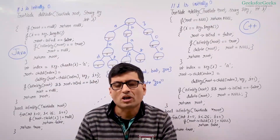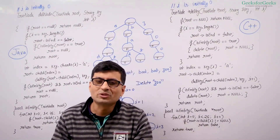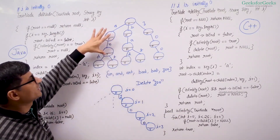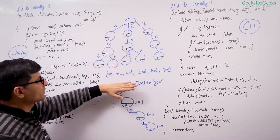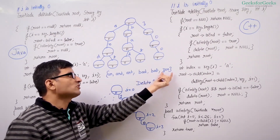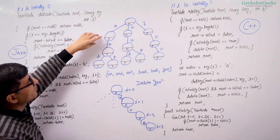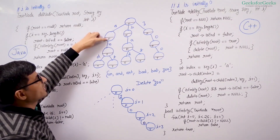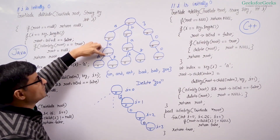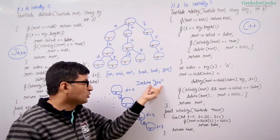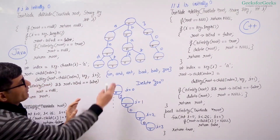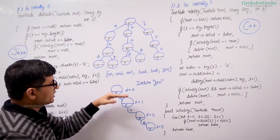Let us now talk about trie delete implementation. Trie delete is very easy to write as a recursive code. To understand the recursive code we are going to consider this trie as an example. This trie represents a dictionary. Some nodes have is_end as false which means they are not end of a word, and some nodes have is_end as true which means they are end of a word. Let's consider the example of zoo to delete from this trie. I have drawn a partial trie here to explain the zoo deletion.